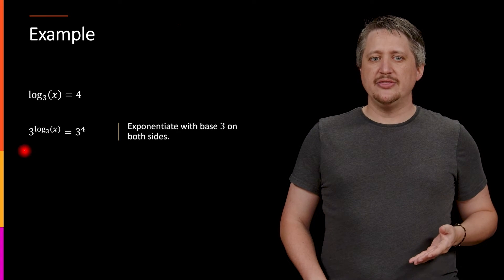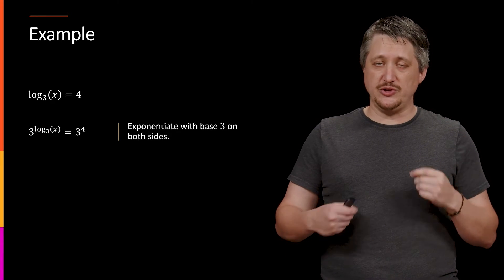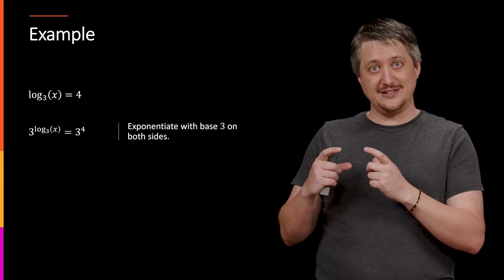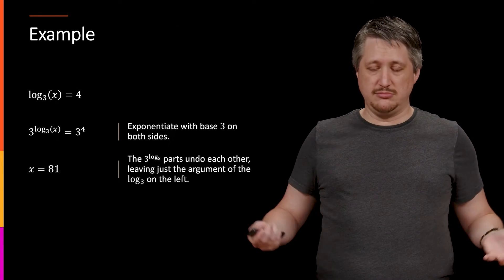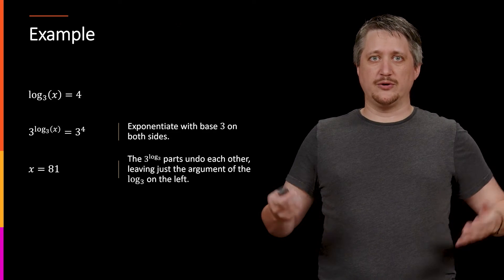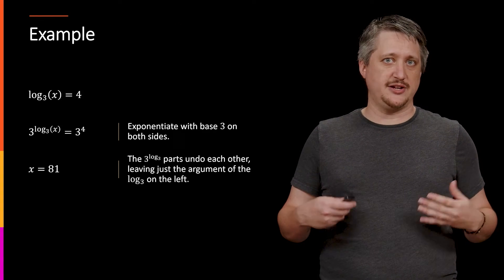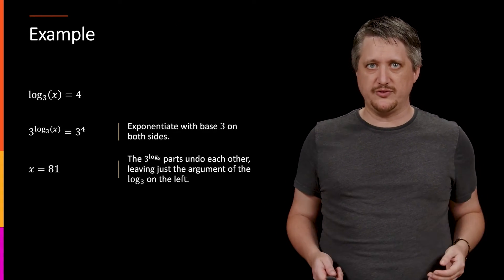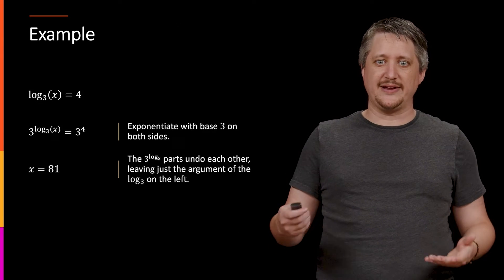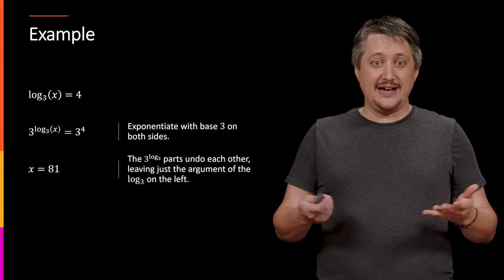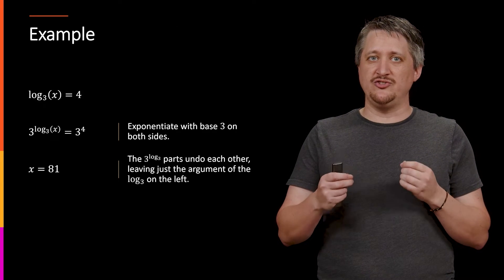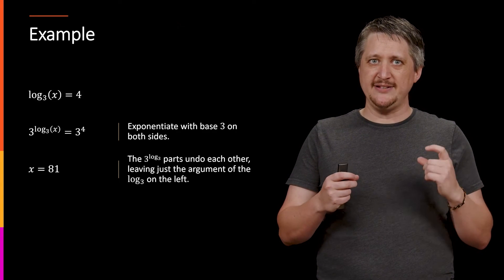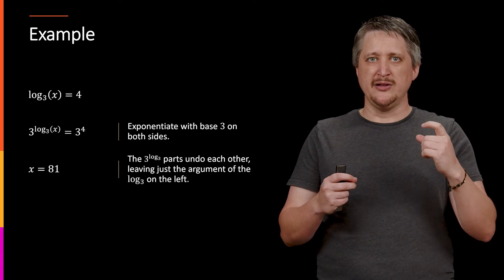On the left, the 3 and the log base 3 are going to undo each other, leaving just the argument, the inside part of the log, which is just x. On the right, that's just a number - this is 3^4. So 3 times 3 is 9 times 3 is 27 times 3, which is 81. So x is 81. So I can use that exponentiation part, using that base to undo the log.